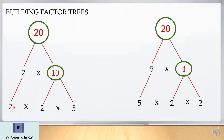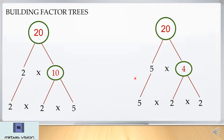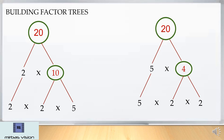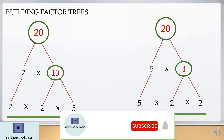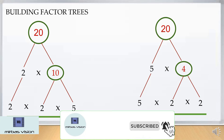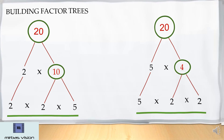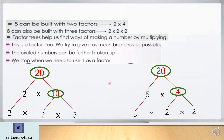When we multiply, you can see 2 into 2 is 4, and 4 into 5 is 20. Here also, 5 into 2 is 10, and 10 into 2 is 20. We get the product 20 when we multiply. That's why I told you numbers can be multiplied in any order.